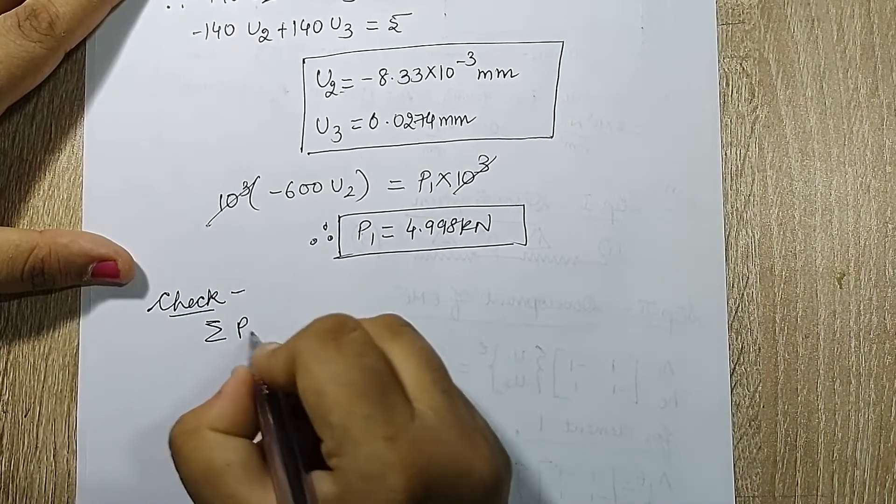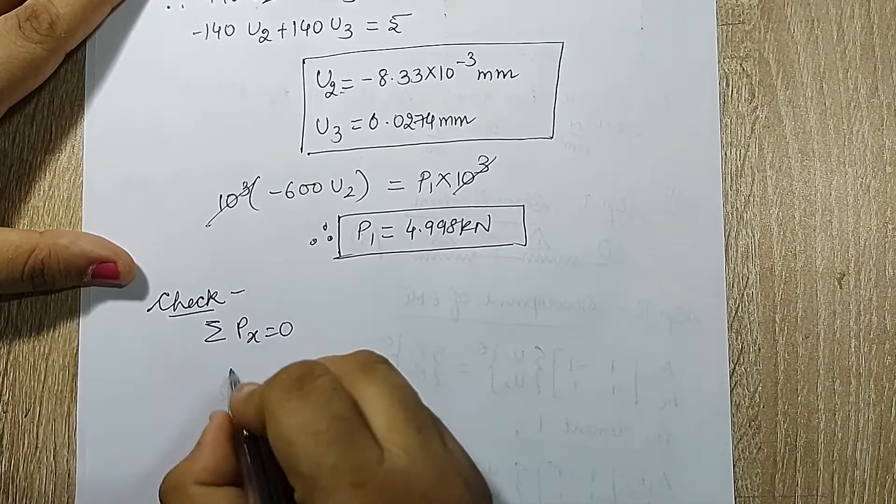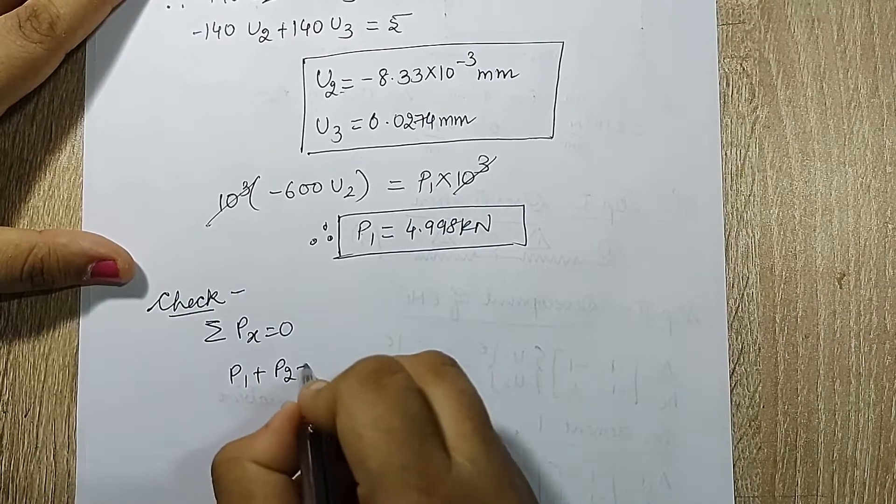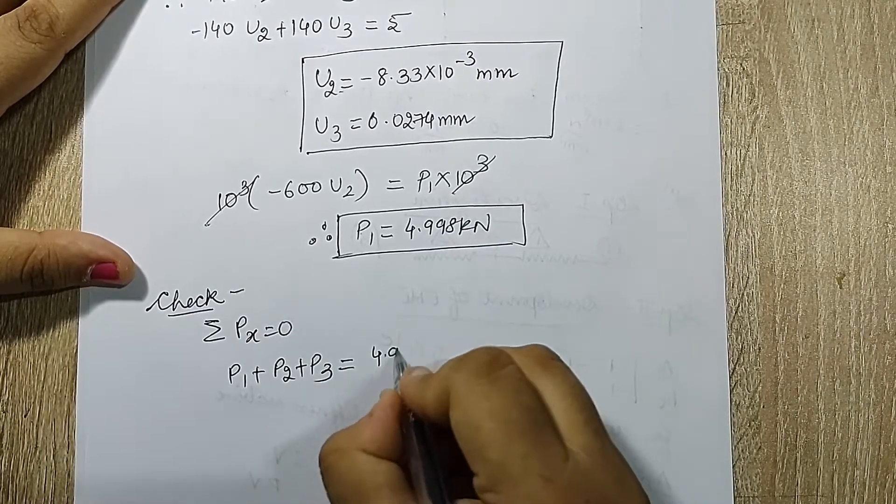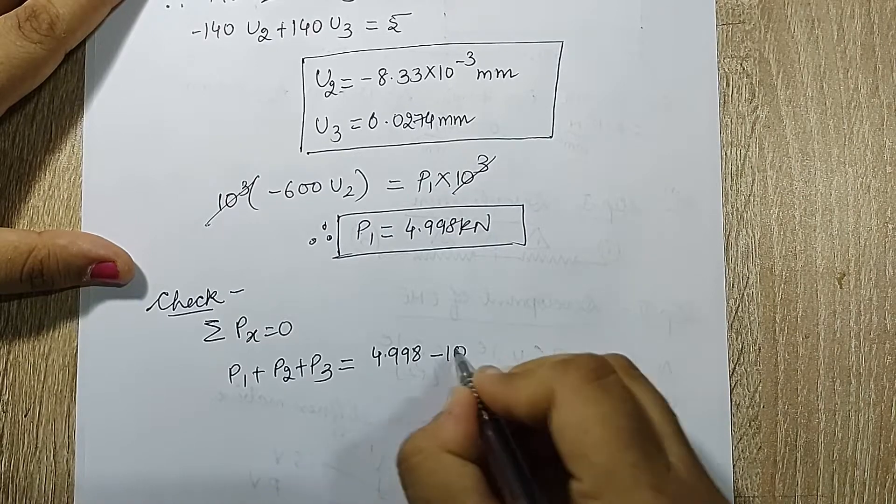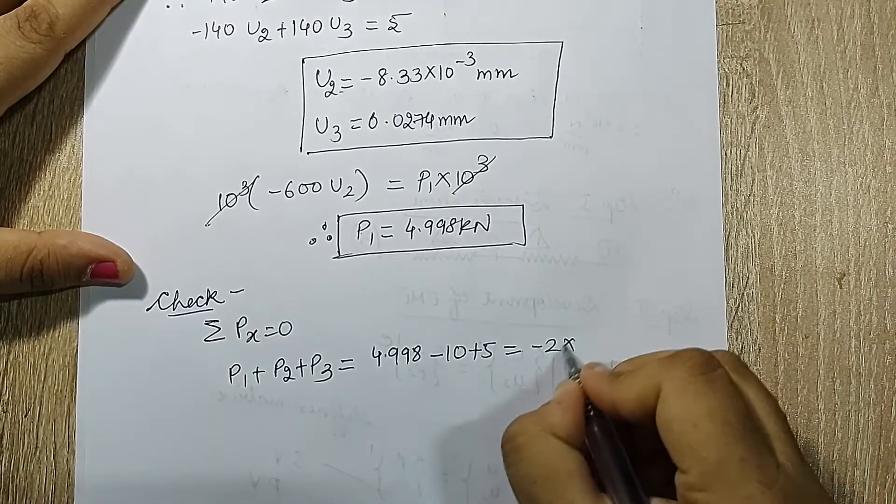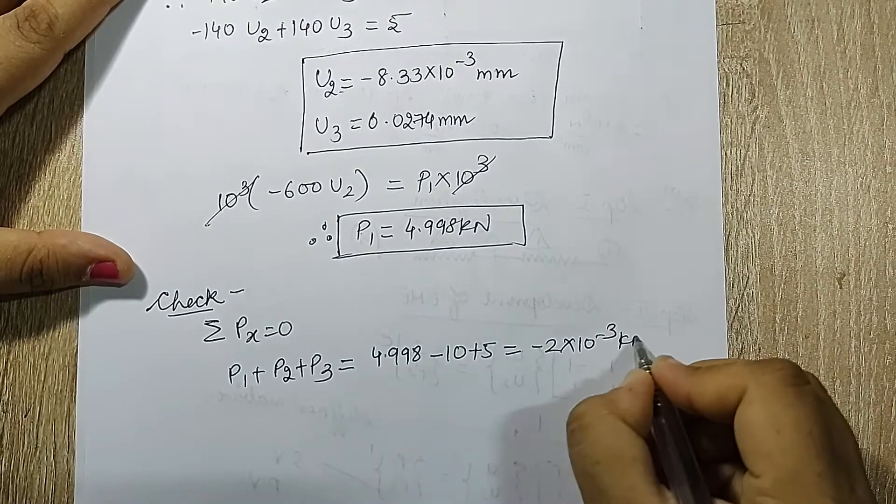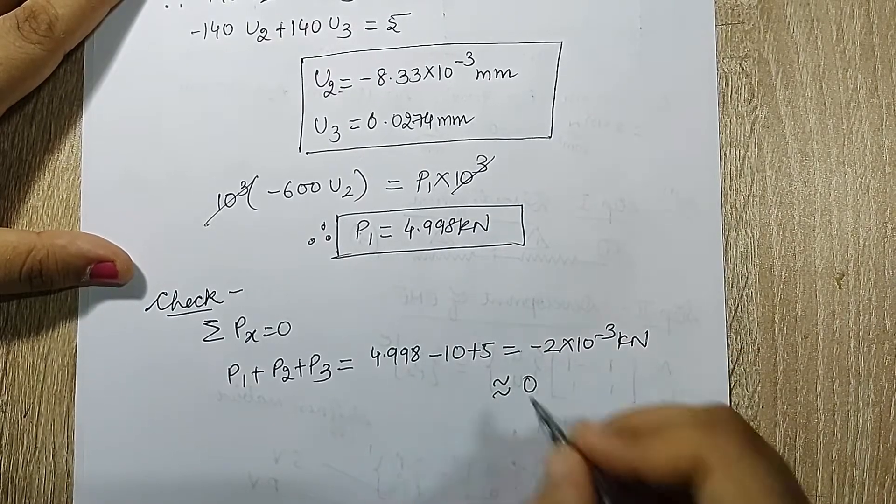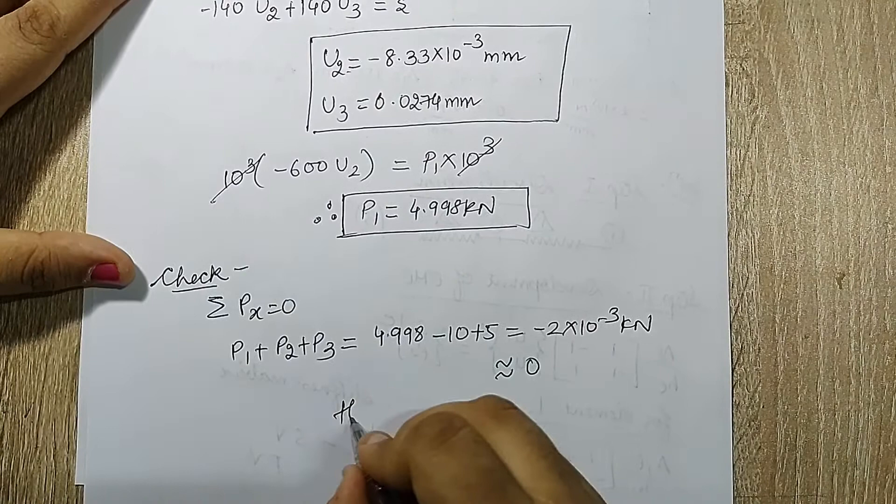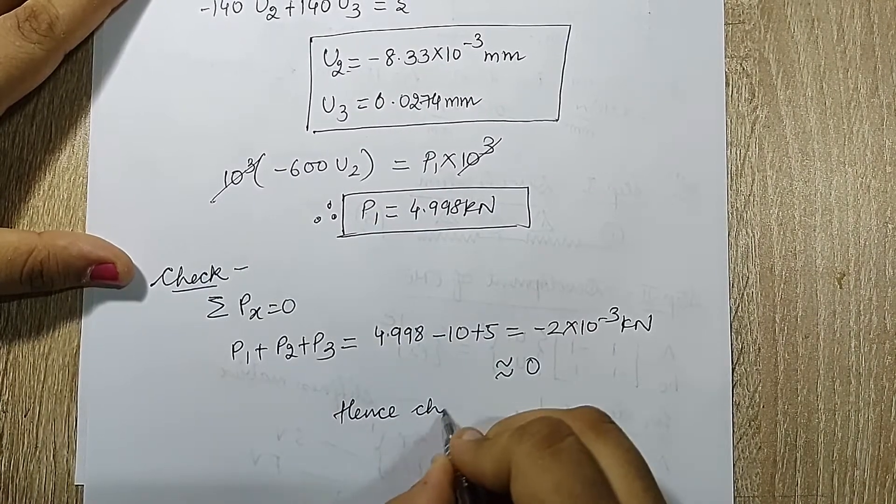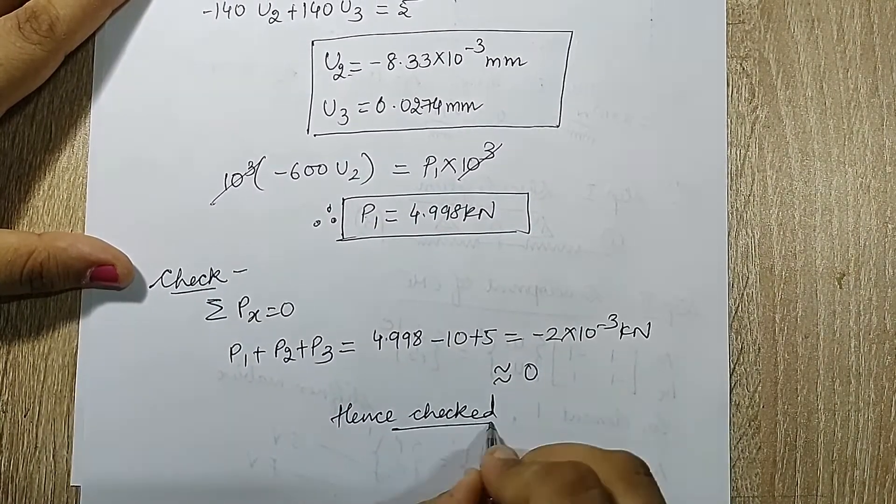Now I will go for check. Summation of force in x direction is 0. My p1 plus p2 plus p3 is equal to 4.998 minus 10 plus 5. I get the value as minus 2 into 10 raised to minus 3 kN which is approximately equal to 0. Hence I have checked.